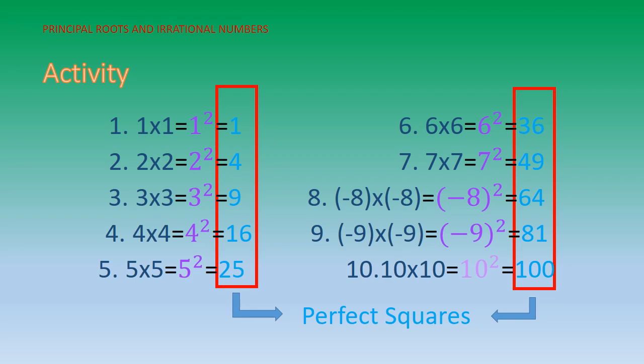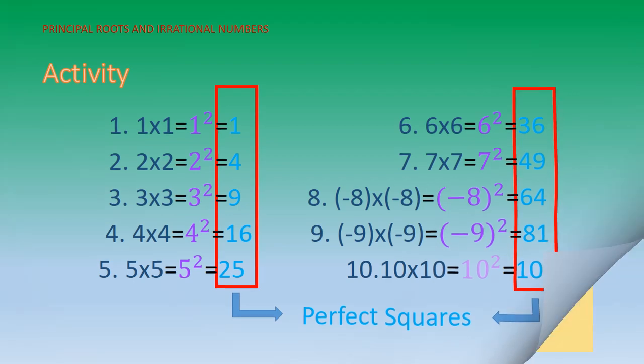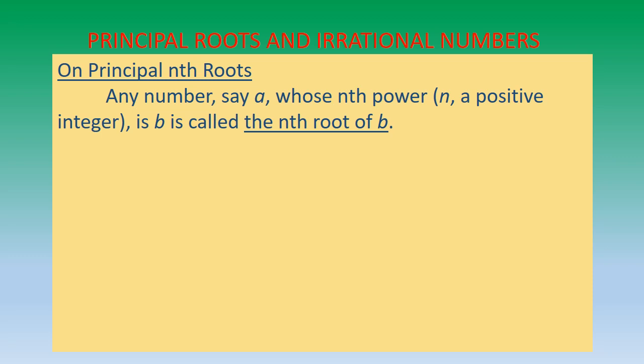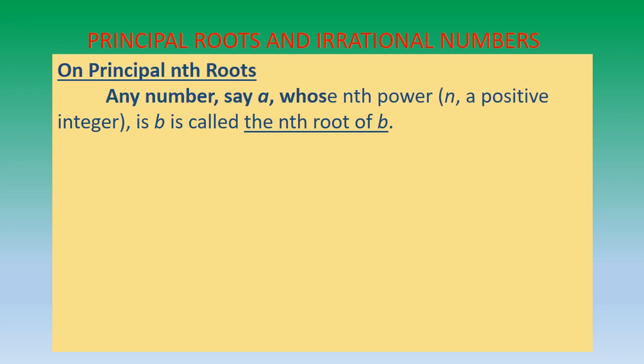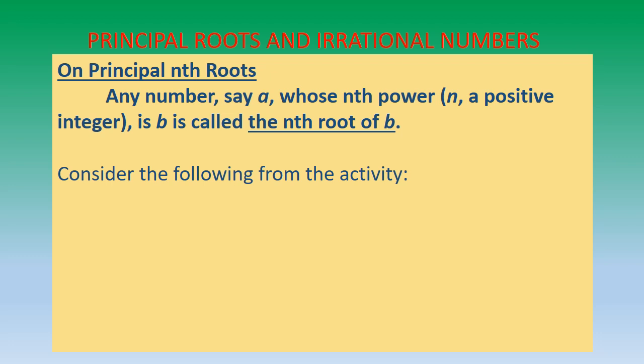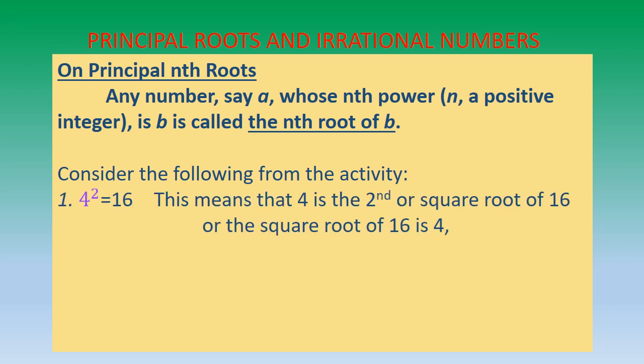Our topic is principal roots and irrational numbers. On principal nth roots: any number, say a, whose nth power (n a positive integer) is b, is called the nth root of b. For example, from the previous activity, 4×4 or 4² = 16. This means that 4 is the second or square root of 16, written as √16 = 4.